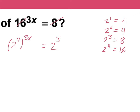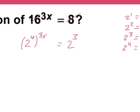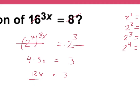Now we can cancel out the bases and just set the rest of the problem equal to each other. So we're going to cross out the 2s, and we have 4 times 3x is equal to 3. I just got rid of the bases and set the rest equal to each other. Now I can solve this for x. So we have 4 times 3x, which is 12x, is equal to 3. And then we can divide 12 from both sides, so we get x is equal to 3 over 12, which simplifies to 1 over 4.